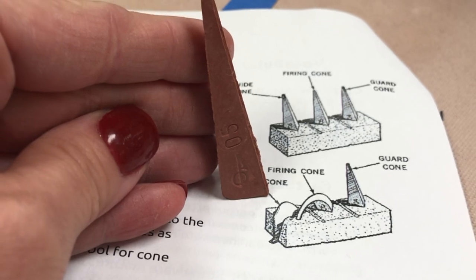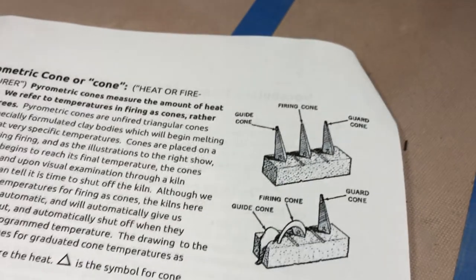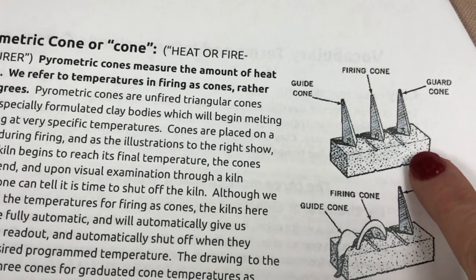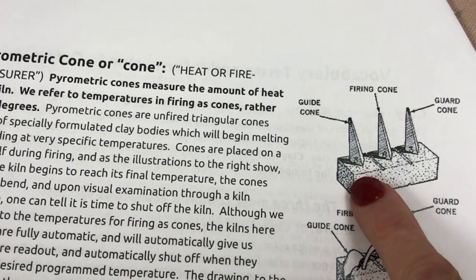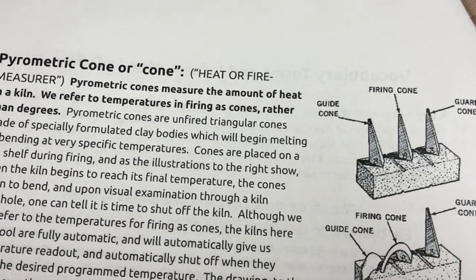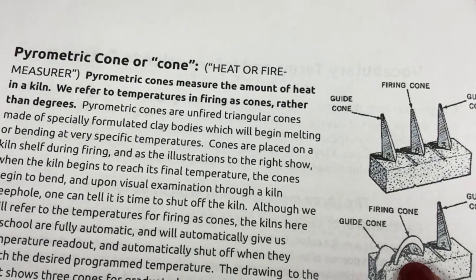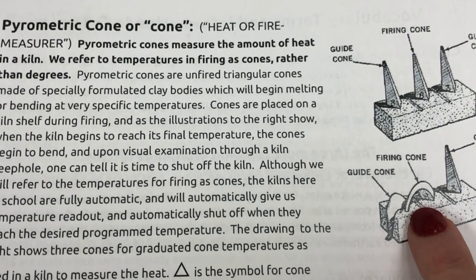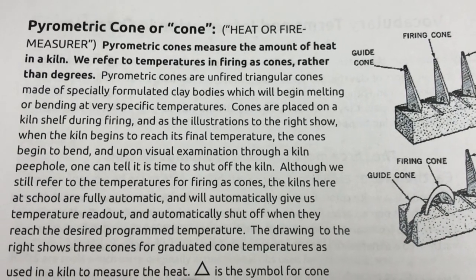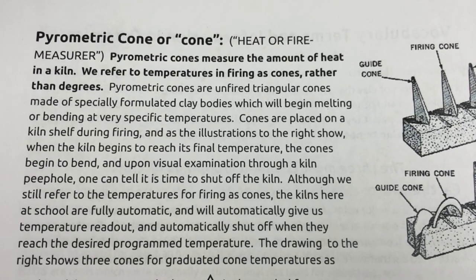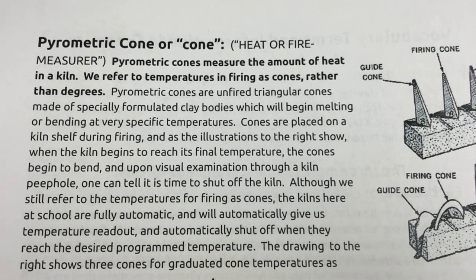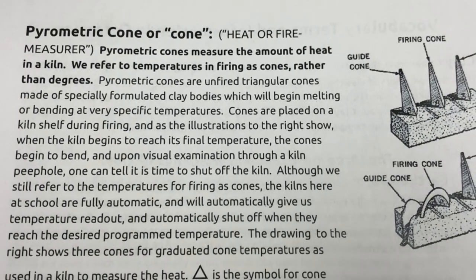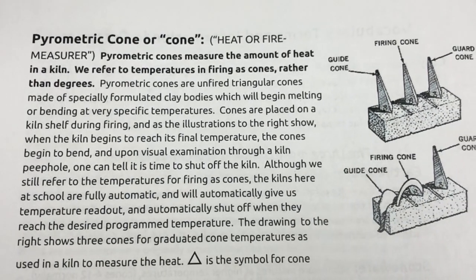You put three cones of three different temperatures next to one another. The guide cone on the left is always a cooler temperature than what you want to fire to, and that one falls first. The firing cone in the middle is the target temperature — it should just bend so the tip touches the cone pack. The guard cone on the right is one cone hotter than your target and should stay standing straight. Also, if you ever see a small triangle symbol before a cone number, the triangle symbol means 'cone,' so if you see it on a glaze label, that's what it means.